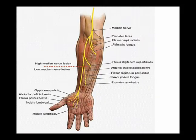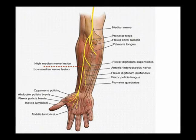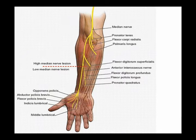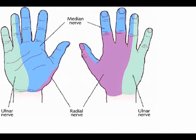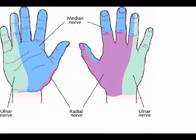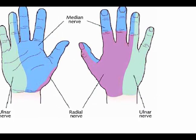The median nerve is the motor innervation for the wrist flexors, for the thenar muscles, and for two lateral lumbricals that move the index finger and the ring finger. The median nerve is the sensory innervation for the lateral half of the palm, for the first three fingers, and for the lateral side of the fourth finger.